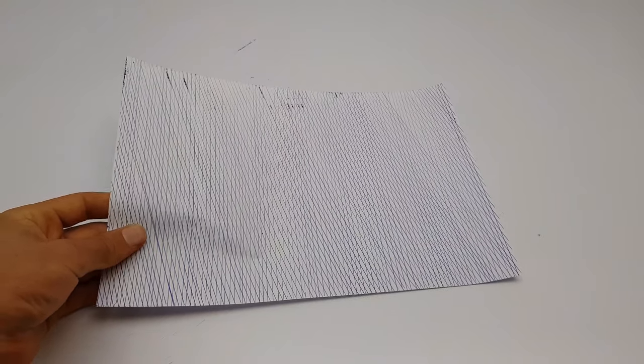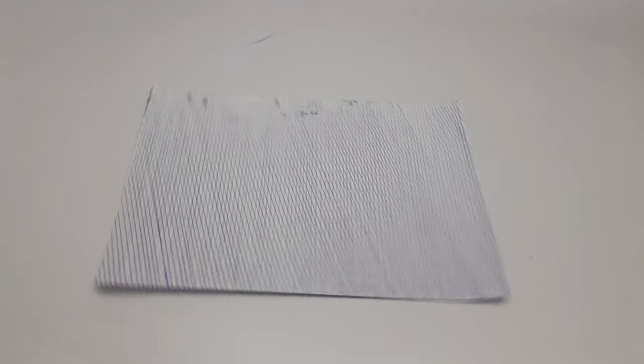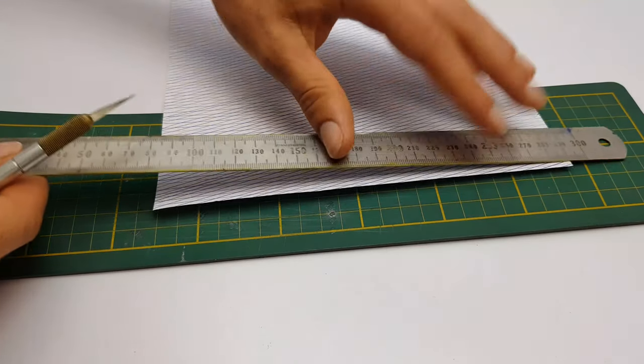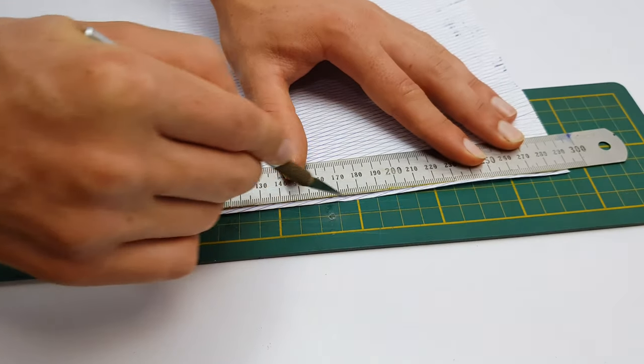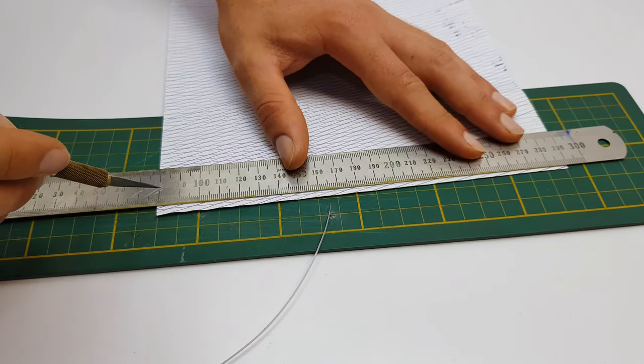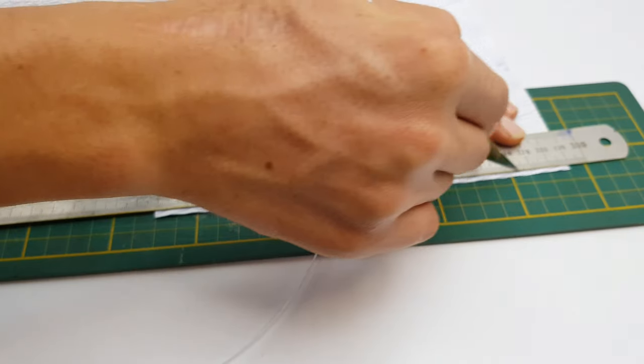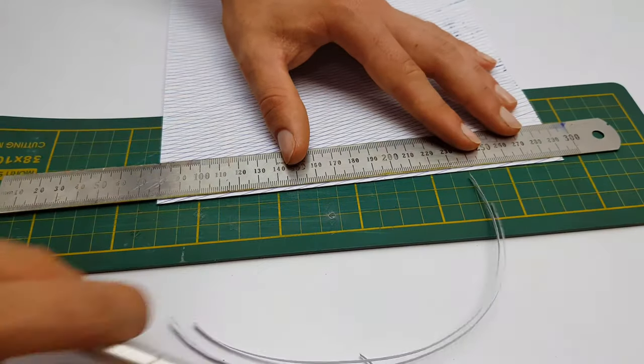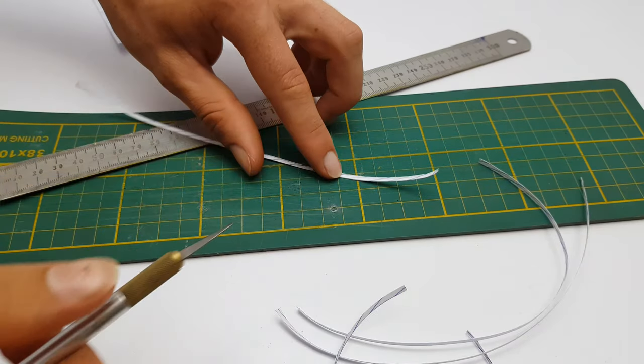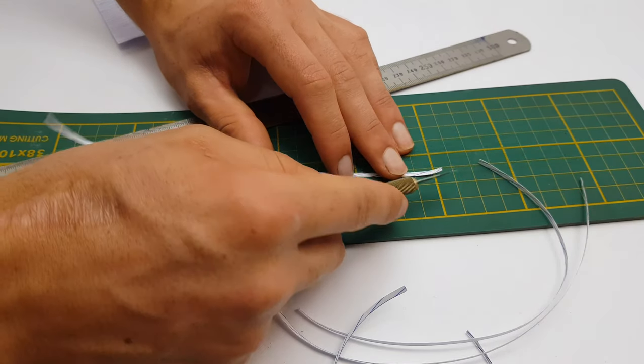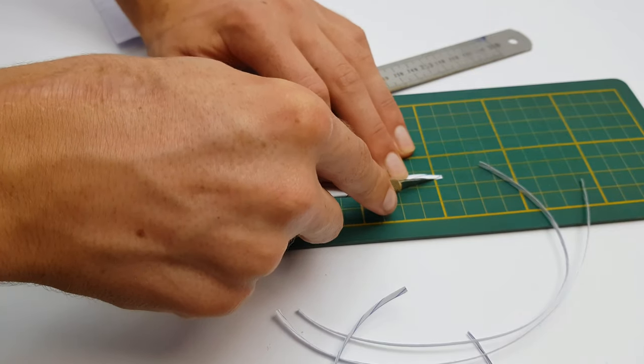Once you're done drawing the lines you'll need a sharp knife to cut out all of the leaves that you'll need for the aloe. I carefully cut the paper in strips following the lines like this, and then I cut the strips into individual leaves for the aloe. Just be careful not to cut your fingers.